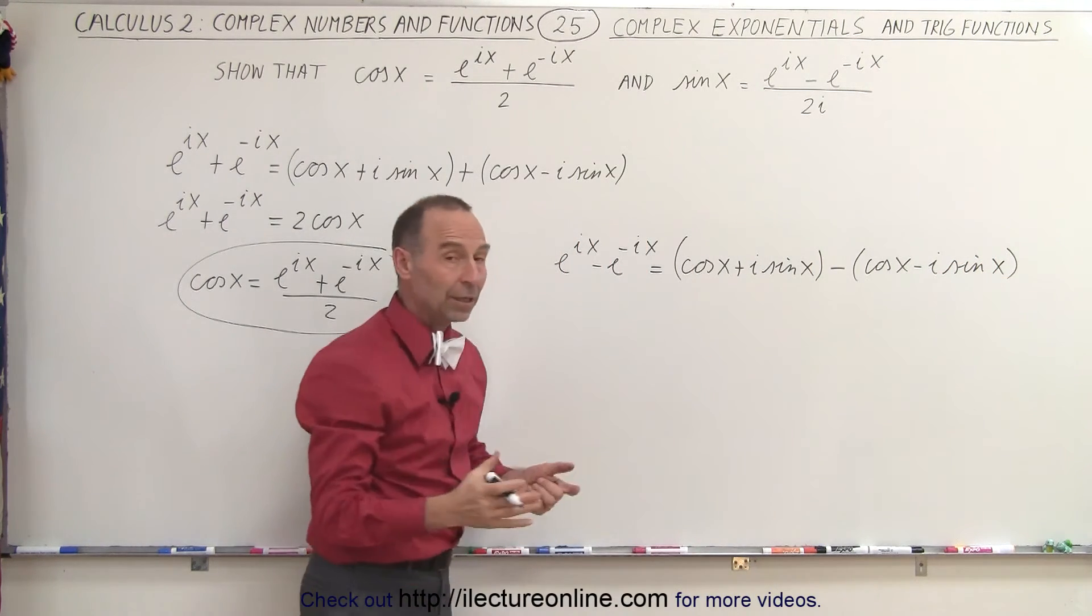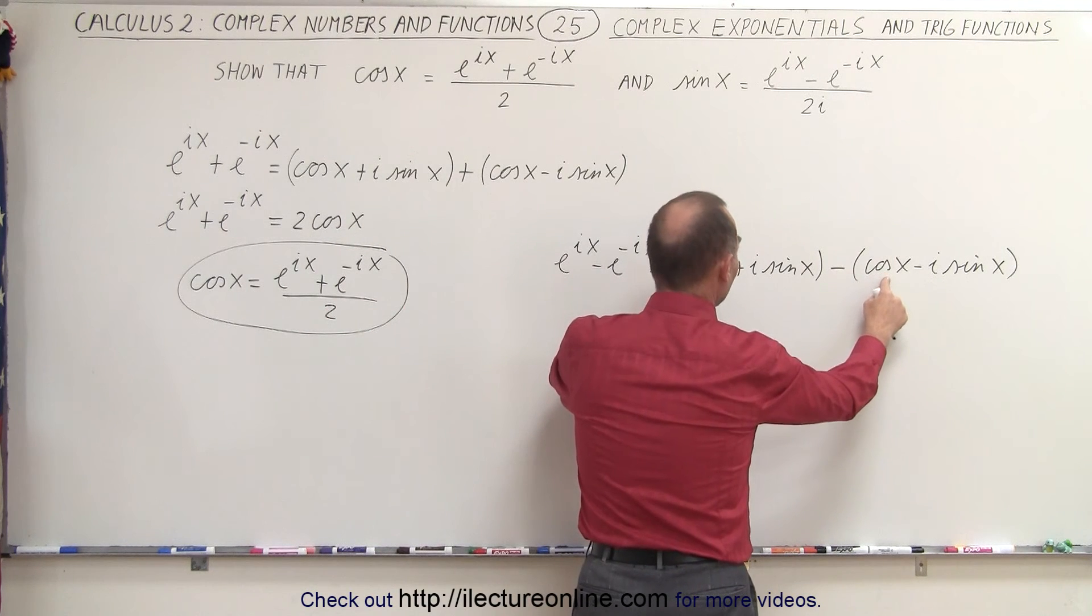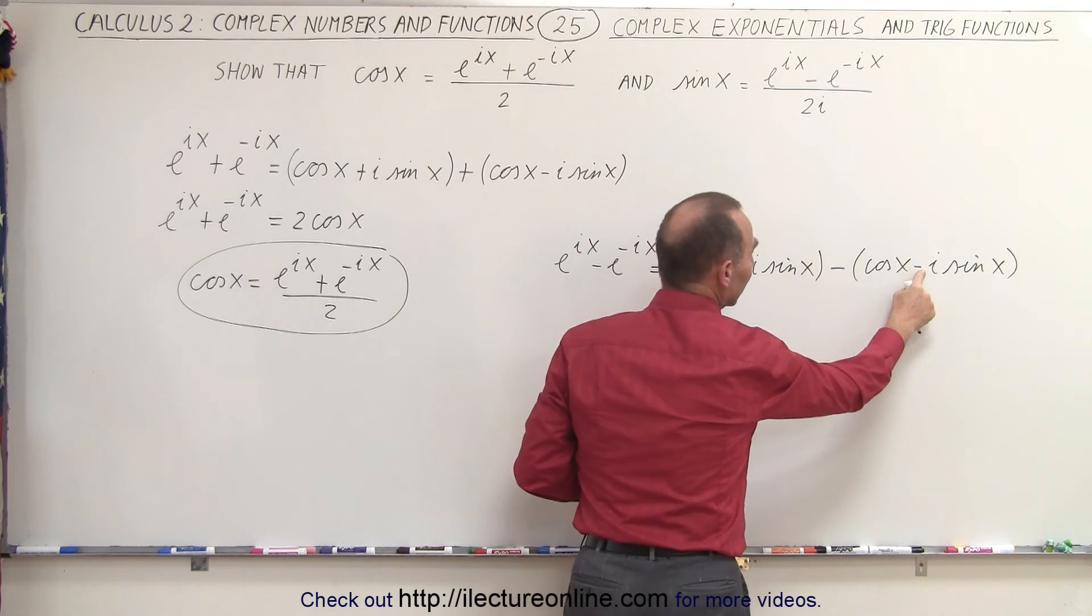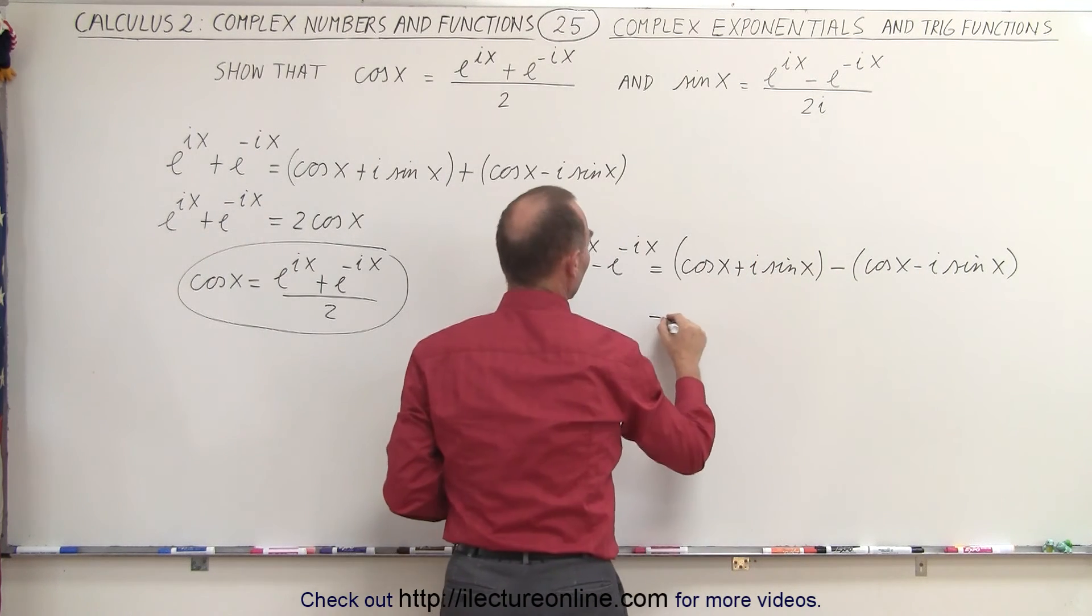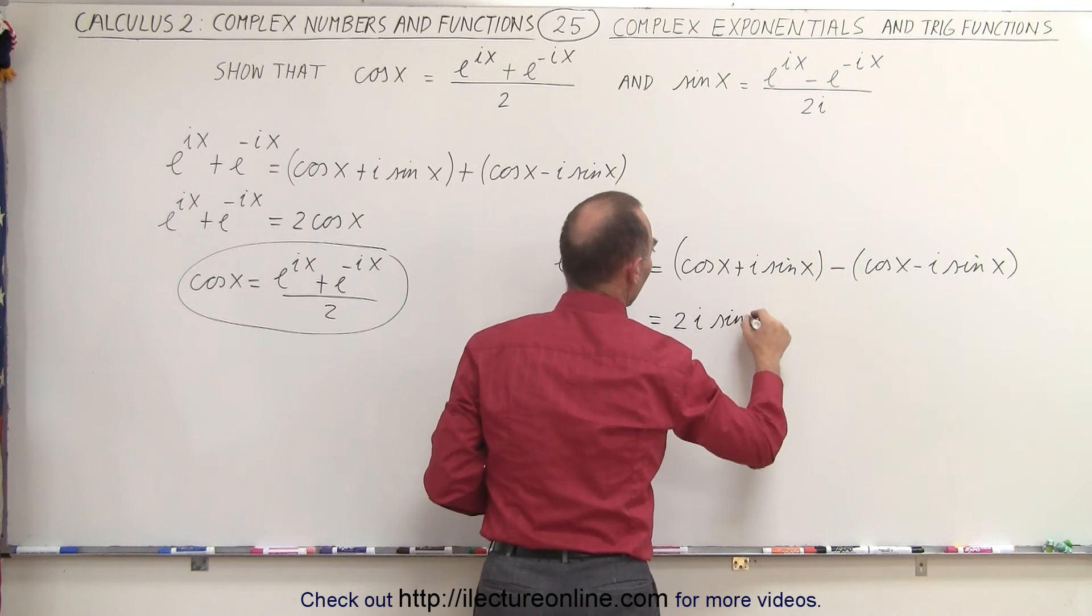Now we realize when we combine those two that the cosine minus the cosine of x cancels out, but the i sine of x does not, because this negative makes that negative into a positive. And so this becomes equal to 2 times i times the sine of x.